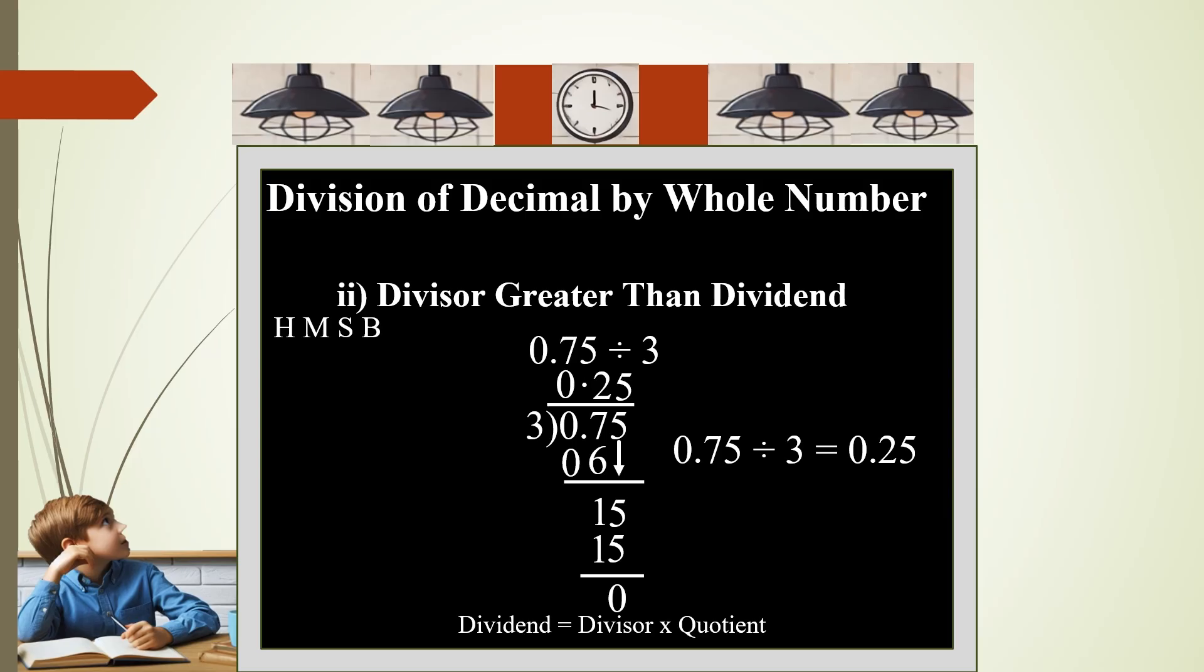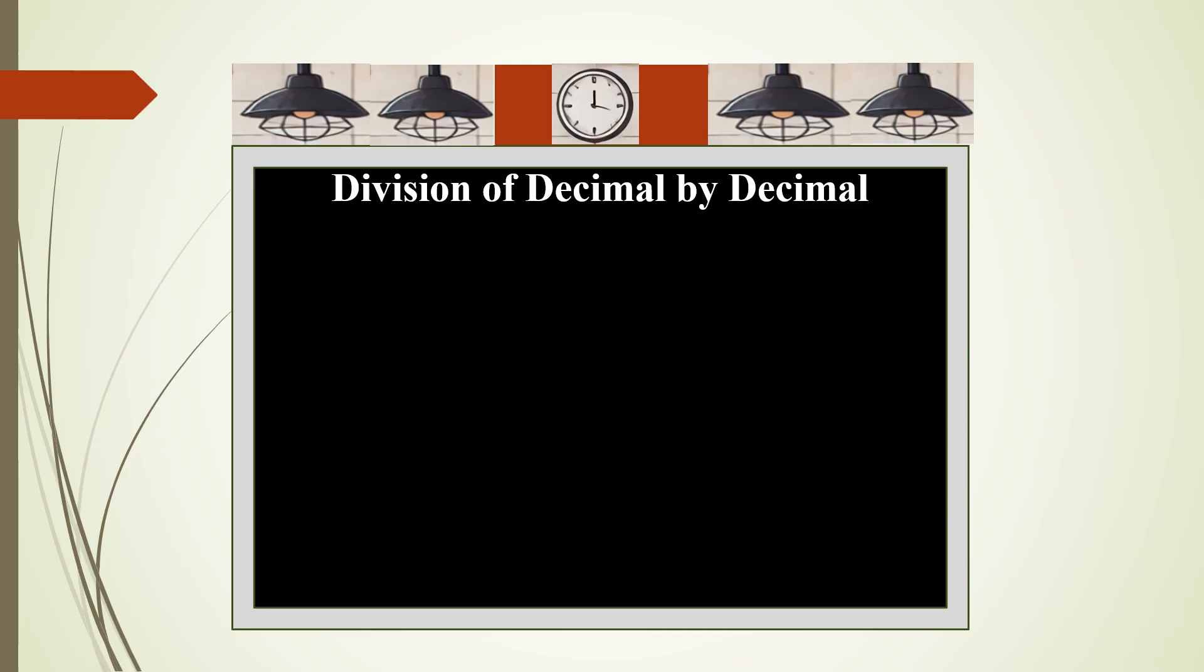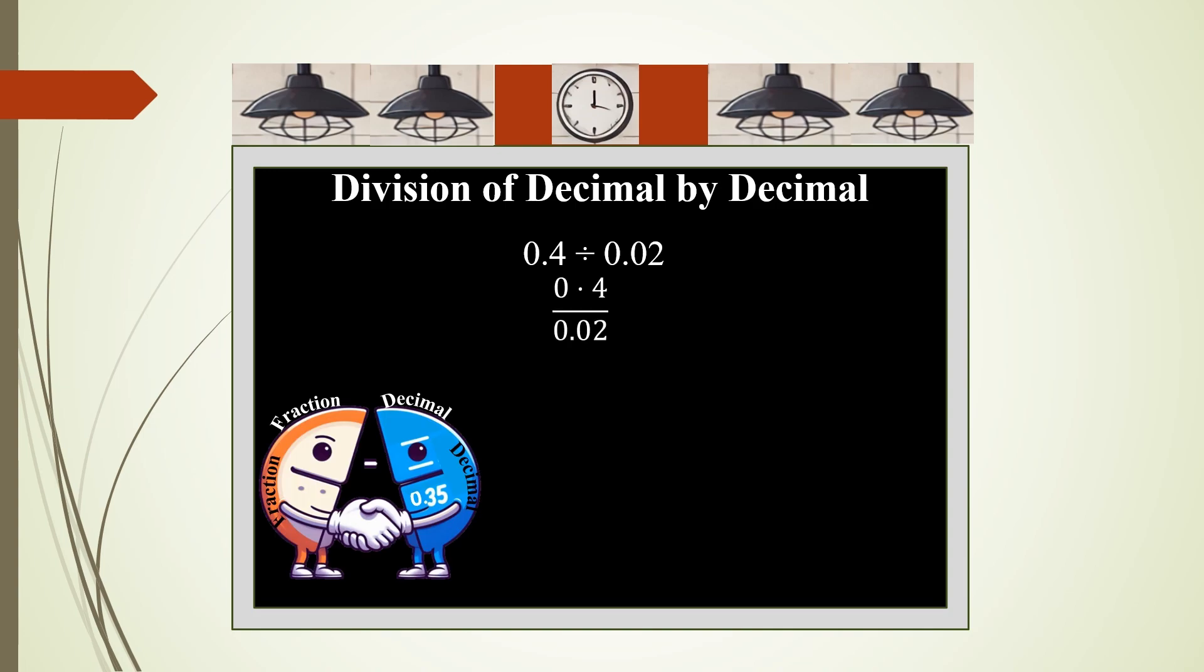Next is division of decimal by decimal, the fourth type of division. Let us take an example: 0.4 divided by 0.02. Here we are going to use fractions because fractions and decimals go hand in hand. 0.4 divided by 0.02. You multiply the numerator by 100 because in the denominator it has two places of decimal and in the numerator there is only one place. When you do 0.4 times 100, you get 40. Then 0.02 times 100 will give you 2. Therefore, this becomes 40 by 2, and 40 by 2 equals 20.